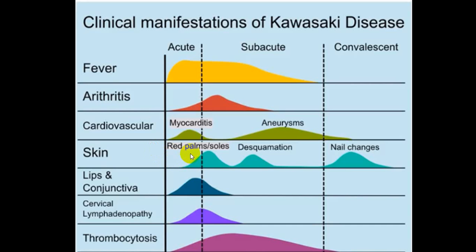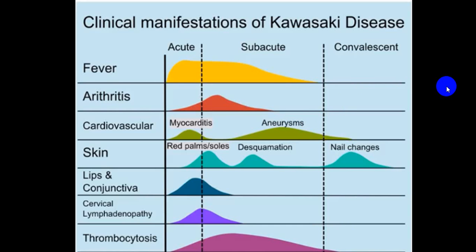In the subacute phase, rash is followed by desquamation. In the convalescent stage, nail changes appear. The lip changes and conjunctival changes slowly subside, lymphadenopathy subsides, and thrombocytosis subsides by the end of the subacute phase — there is no thrombocytosis in the convalescent phase. In the convalescent phase, mainly you will have complications because of vasculitis, and nail changes will appear after six to seven weeks. This slide describes the entire course of Kawasaki disease.